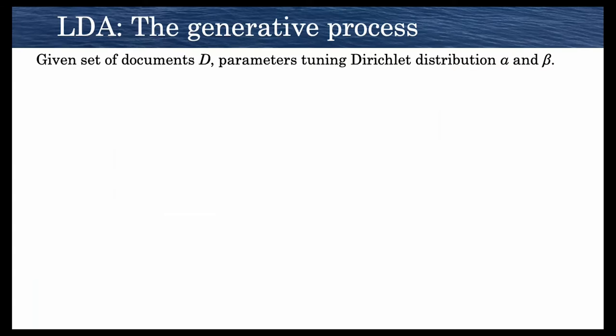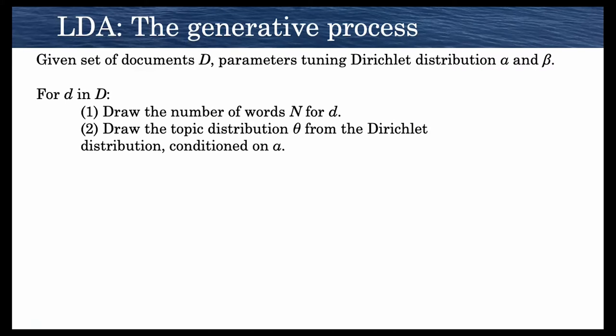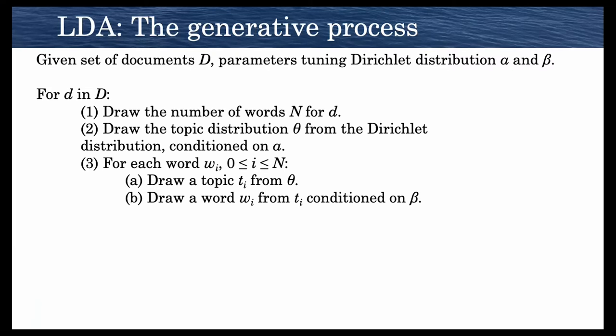Let's look at how the generative process of LDA works. We're asked to generate a set of documents D. For each document, we draw the number of words and the topic distribution theta. Then, for each word that we want to generate, we draw a topic from theta, and then we draw a word from that topic. In this sense, each word in the document comes from some topic with some probability.